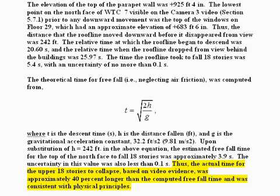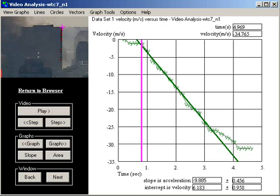If you start with a 40% increase in the time of fall and work backwards to compute the effective acceleration, their claim is equivalent to saying the acceleration of the building is only 5 meters per second squared, which is 51% the acceleration of gravity.